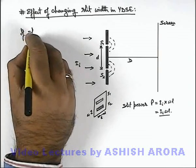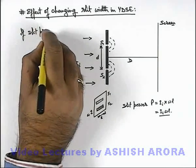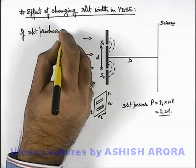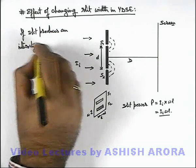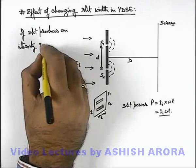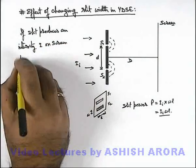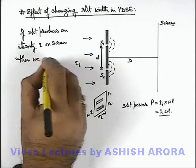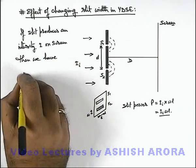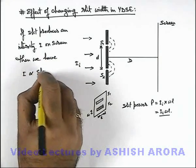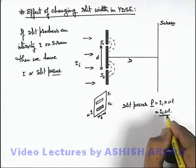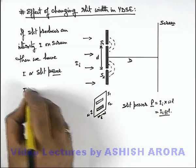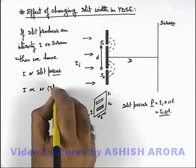If a slit produces an intensity I on screen, then we can write I is proportional to the slit power, and slit power is proportional to slit width. So we can write I is proportional to w, which is the slit width.